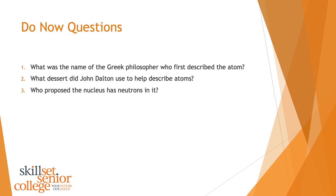The first do now question is: what was the name of the Greek philosopher who first described the atom? Second, what dessert did John Dalton use to help describe atoms? And number three, who proposed the nucleus has neutrons in it? I'll give you a second to write the answers and we'll go over them just now.